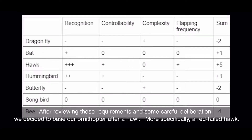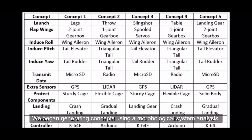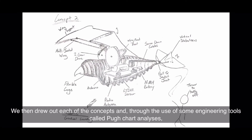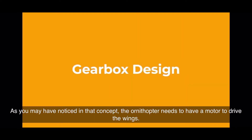As our final requirement, since it will be added to RIT's Robotic Zoo, she wanted it to resemble an animal. After reviewing these requirements and some careful deliberation, we decided to base our ornithopter after a hawk — more specifically, a red-tailed hawk. We began generating concepts using a morphological system analysis, drew out each concept, and through the use of engineering tools called the Pugh chart analysis, decided upon our second initial concept.